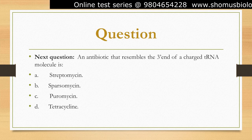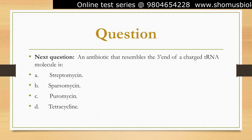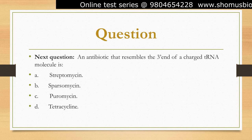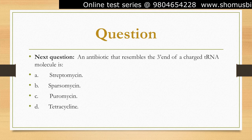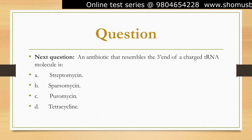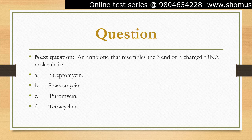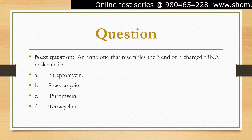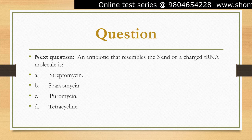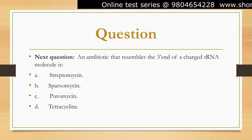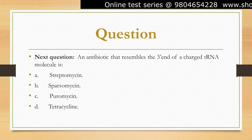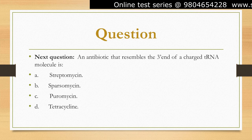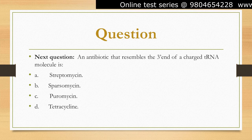Therefore, the correct answer is option C. Puromycin is a structural analog of the 3' end of aminoacyl-tRNA and it can be incorporated into a growing peptide chain in place of an aminoacyl-tRNA.